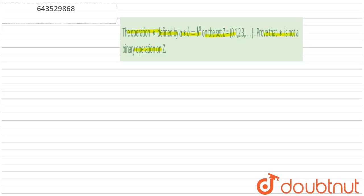So let's see the solution. So what is the binary operation? If a comma b belongs to Z and if a star b also belongs to Z, then it is a binary operation.